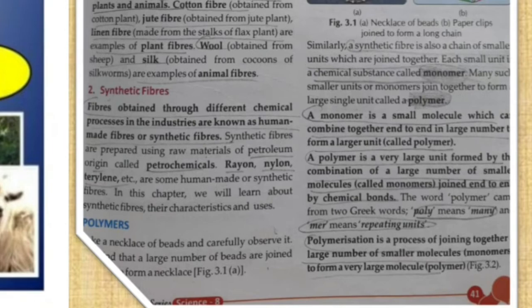So monomer is the smallest unit of any polymer — it is its chemical unit. A monomer is a small molecule which combines end to end in large numbers and forms a larger unit called a polymer. Polymer is a very large unit formed by the combination of so many small molecules called monomers. Poly means many, mono means single, and -mer means repeating unit.